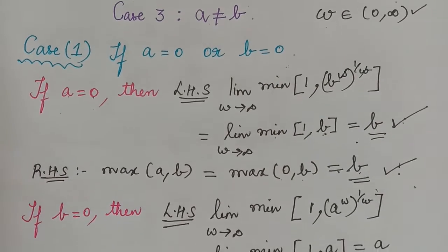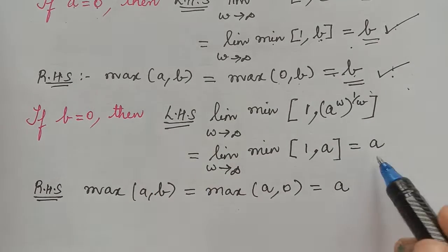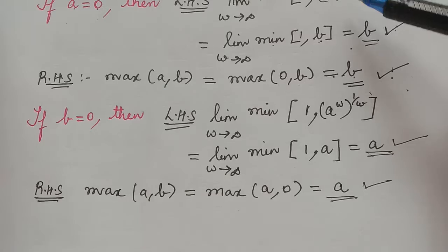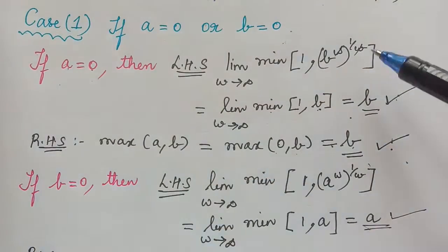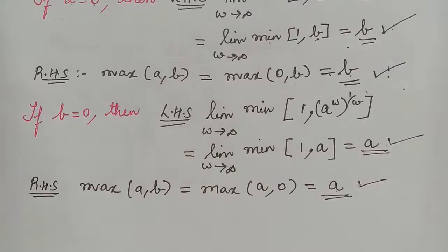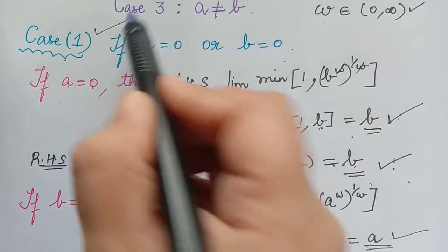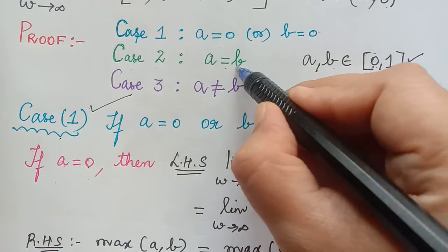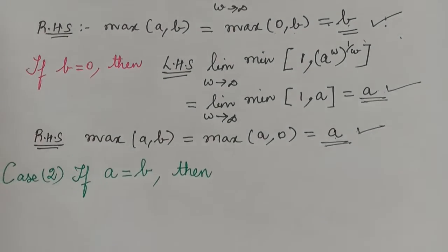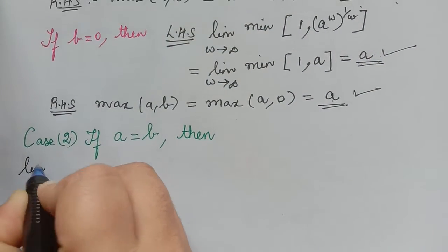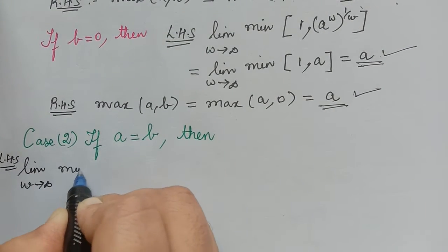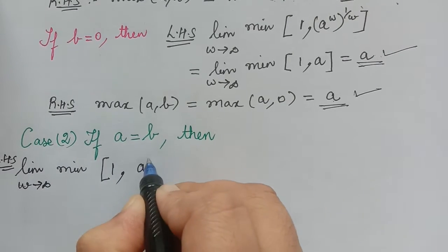If b equals 0, then the left hand side is obtained to be a, and the right hand side is also a — proved in the same way as for a equal to 0. Hence the theorem holds if b is equal to 0, and therefore on the whole for case 1 the theorem holds. Now the second case is when a is equal to b. The left hand side is limit w tending to infinity of minimum of 1 and a^w plus.